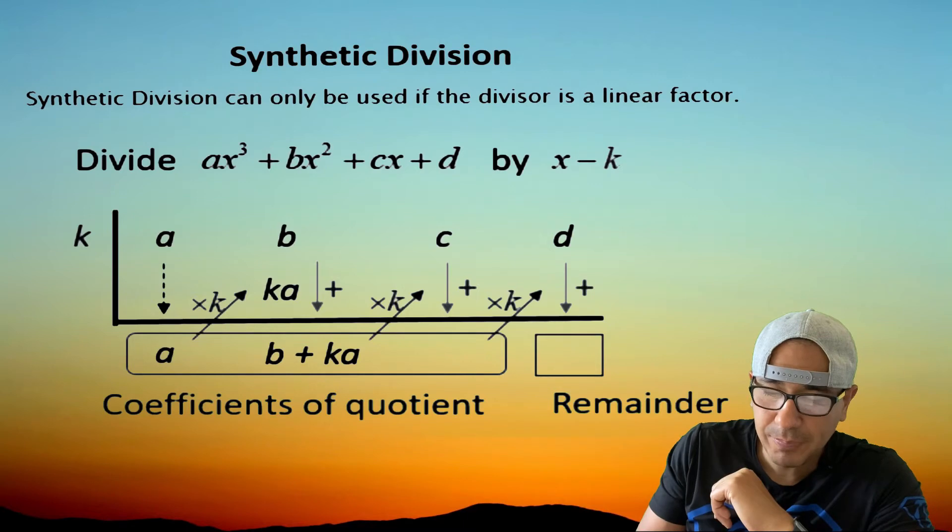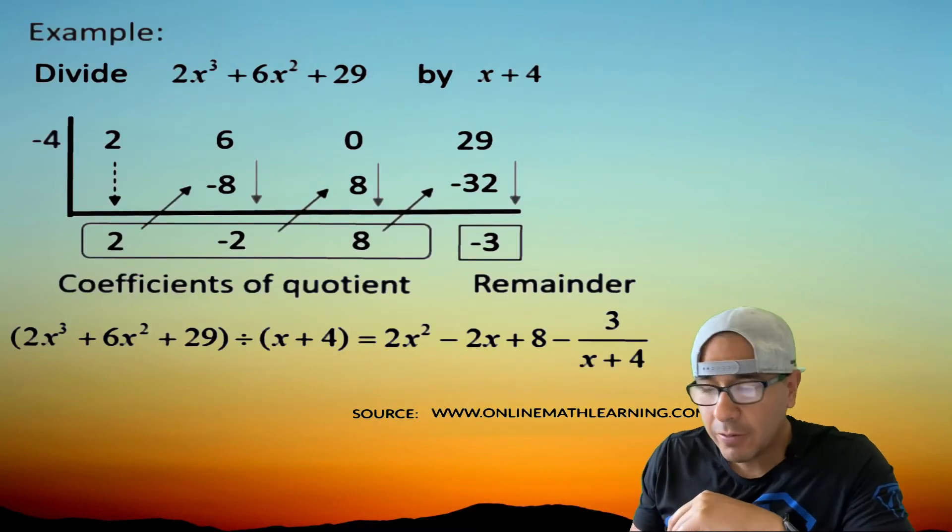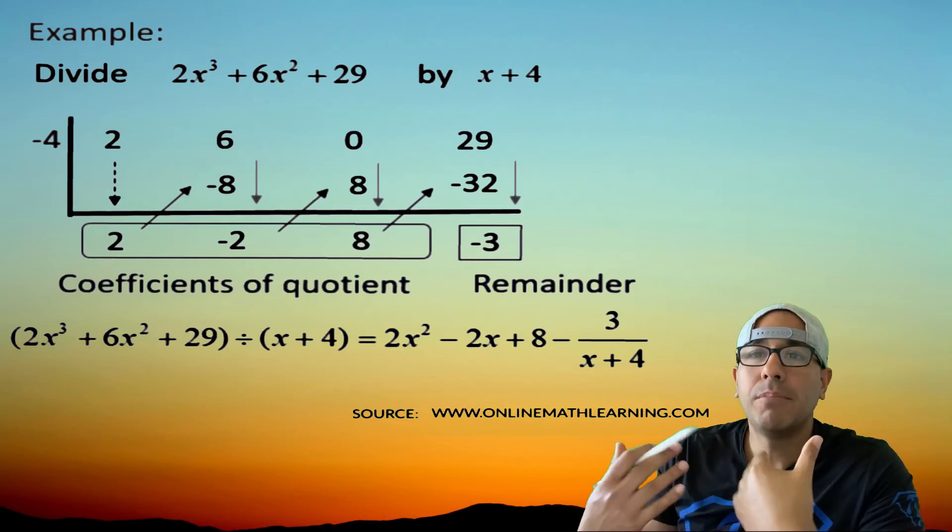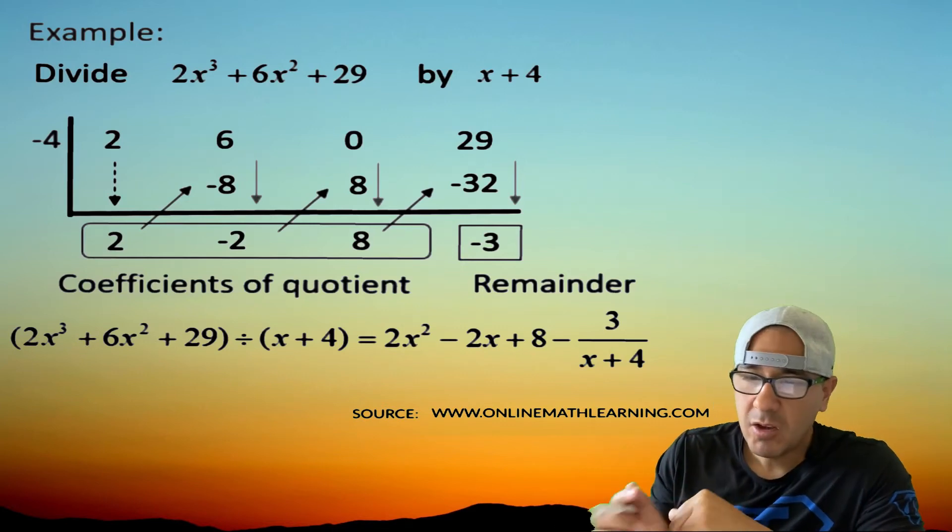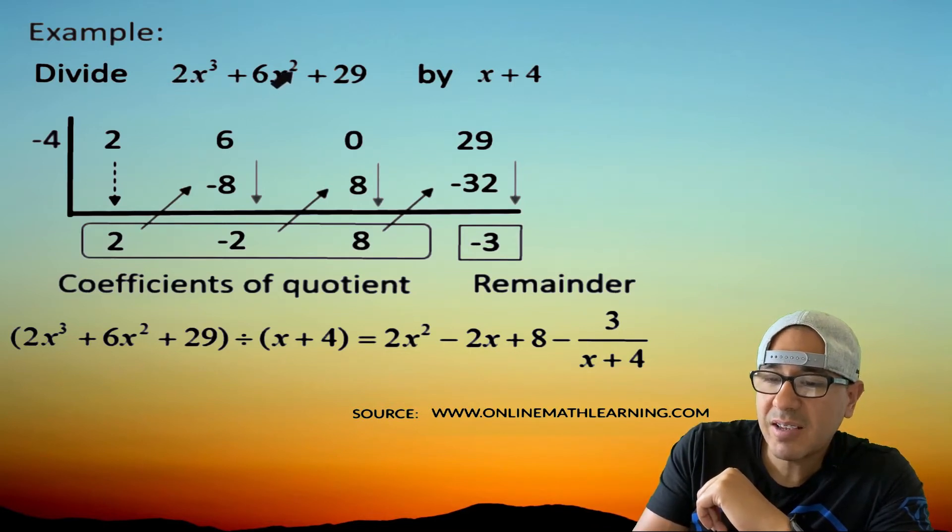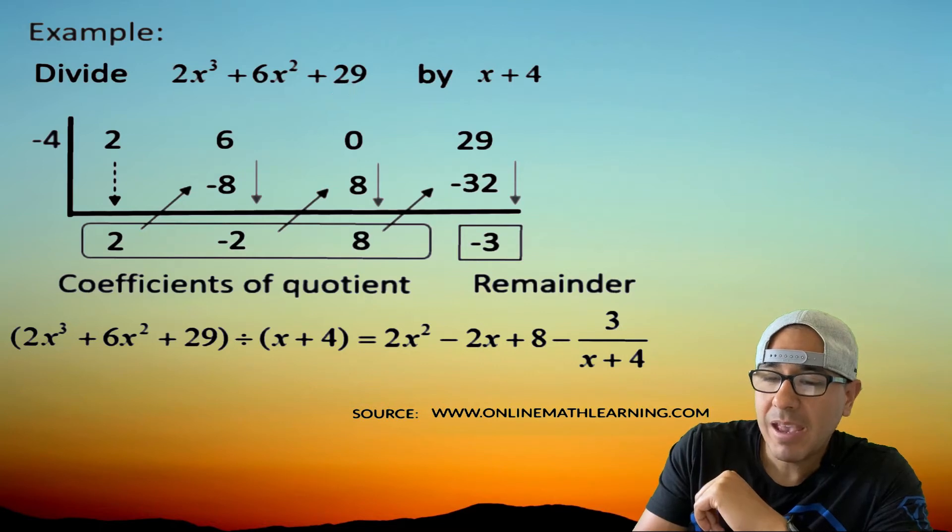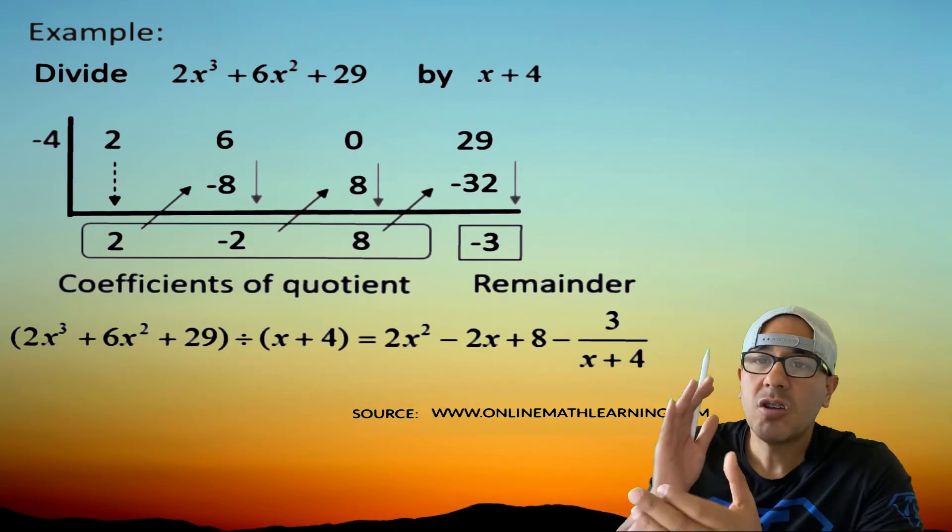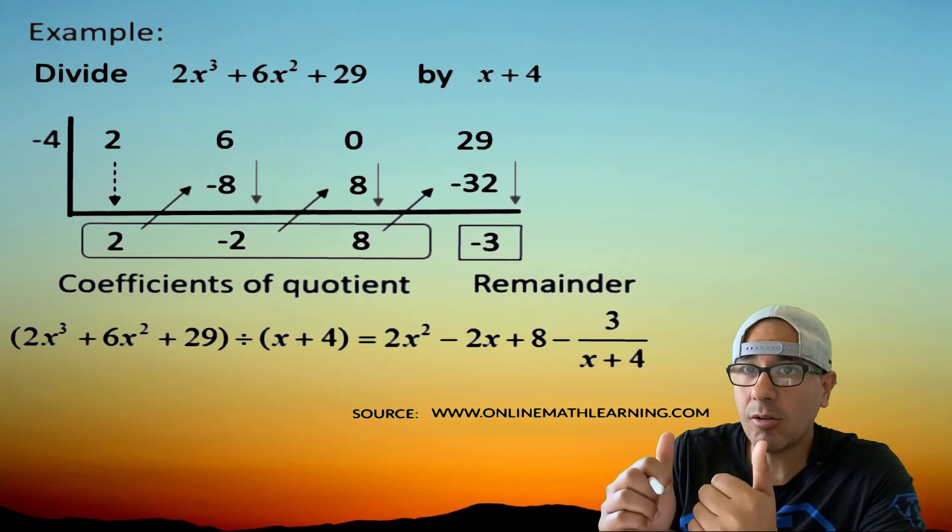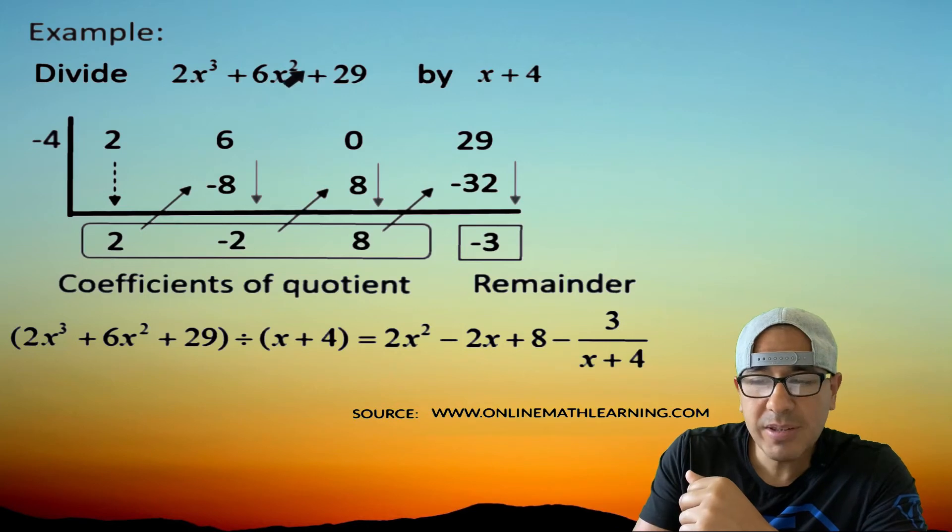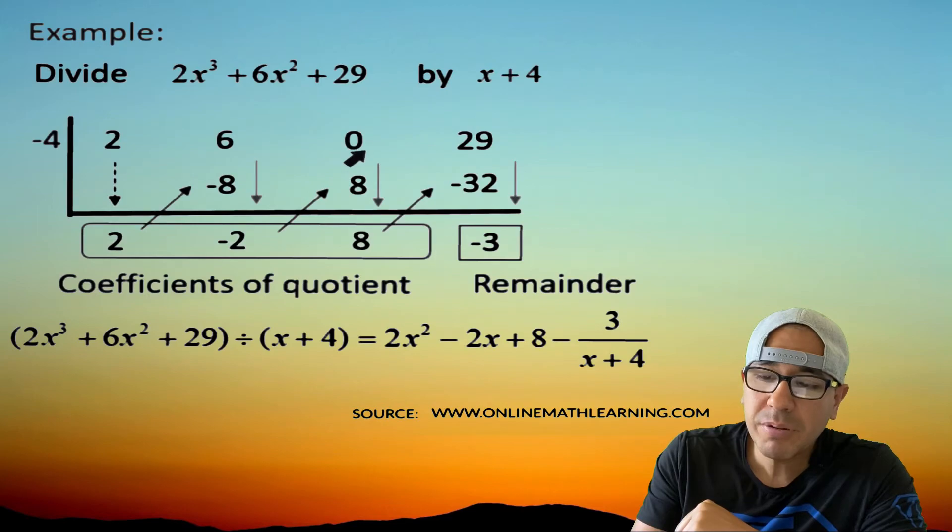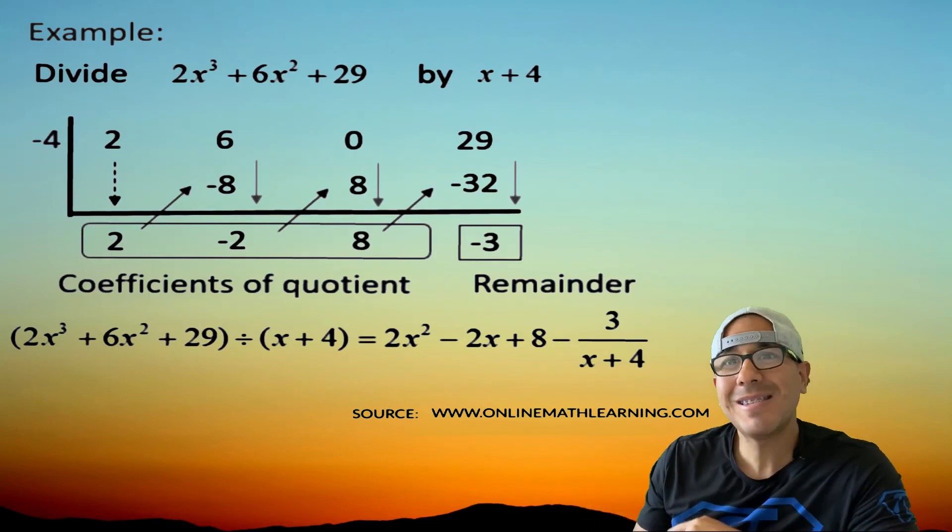Alright, let's start with an example. So here from www.onlinemathlearning, they give us a picture here, but I'm going to do my own in a few seconds. So here, the example they give us is 2x³ + 6x² + 29, and we're going to divide that by x + 4. So number one, make sure it's in descending order. So it's in descending order. But notice, you see how we're missing the x term here? So whenever you're missing a term, make sure you put a zero placeholder. Write that down. This is money.